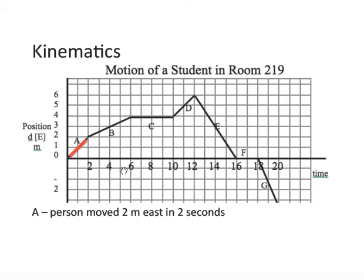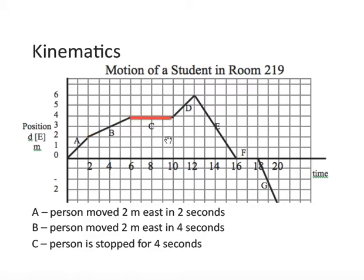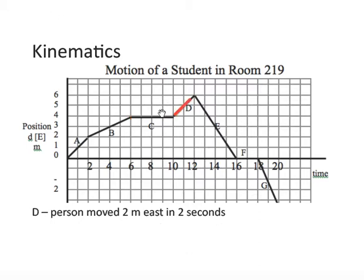For section A, person moved two meters east in two seconds. B: another two meters east, but this time in four seconds. And C: person hasn't moved at all. They're stopped for over four seconds. Remember, what's the slope of this line? Slope is zero. That means their velocity is zero. Section D: they've moved another two meters east in another two seconds.